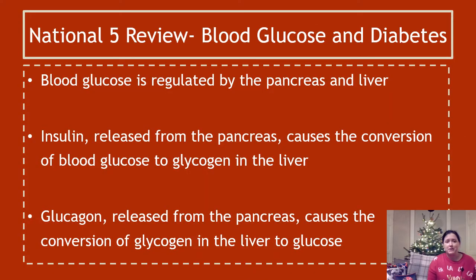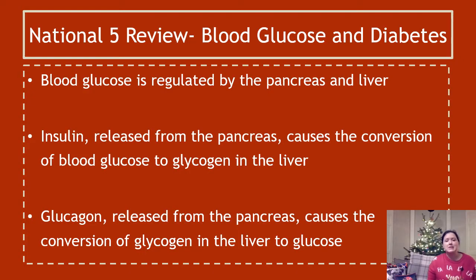Looking at the National 5 material you're supposed to know: blood glucose is regulated by the pancreas and the liver working together. Insulin is released from the pancreas and causes a conversion of blood glucose to glycogen in the liver, and glucagon released from the pancreas causes the conversion of glycogen in the liver to glucose. An important language point — we do not say that insulin turns glucose to glycogen and we do not say that glucagon turns glycogen to glucose. The reason is that cells in the liver do that based on the instruction that comes to them, either from insulin or from glucagon.